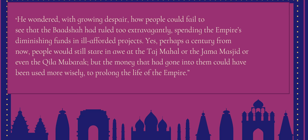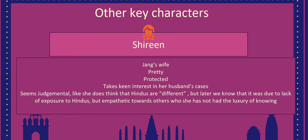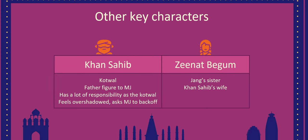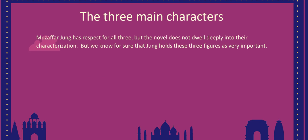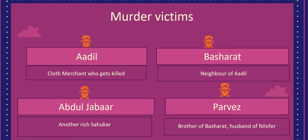The wife of Muzaffar Jung is called Shirin. She is very protected and helps Muzaffar Jung solve many of his cases; they share a nice bond. The other two characters close to Muzaffar Jung are Khan Sahib, the Kotwal, who is overwhelmed by his workload, and Zeenat Begum, who is Jung's sister and Khan Sahib's wife. Zeenat Begum does not have a large role in the novel, but these are the three main figures in Jung's personal life.